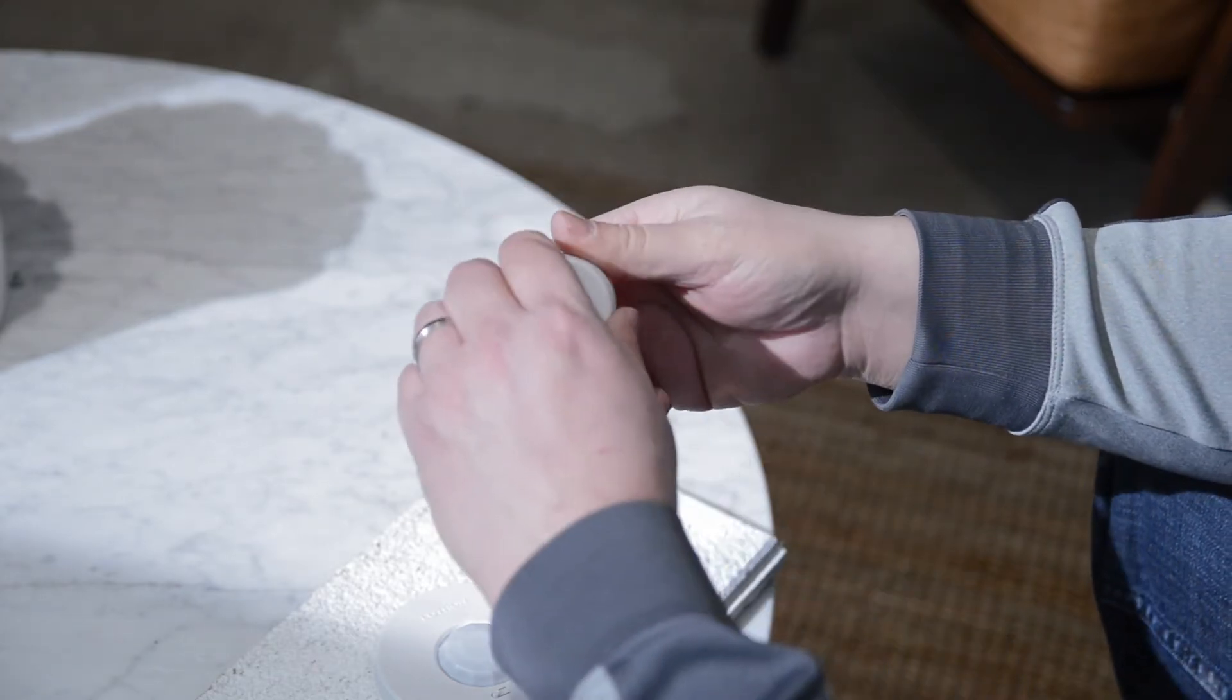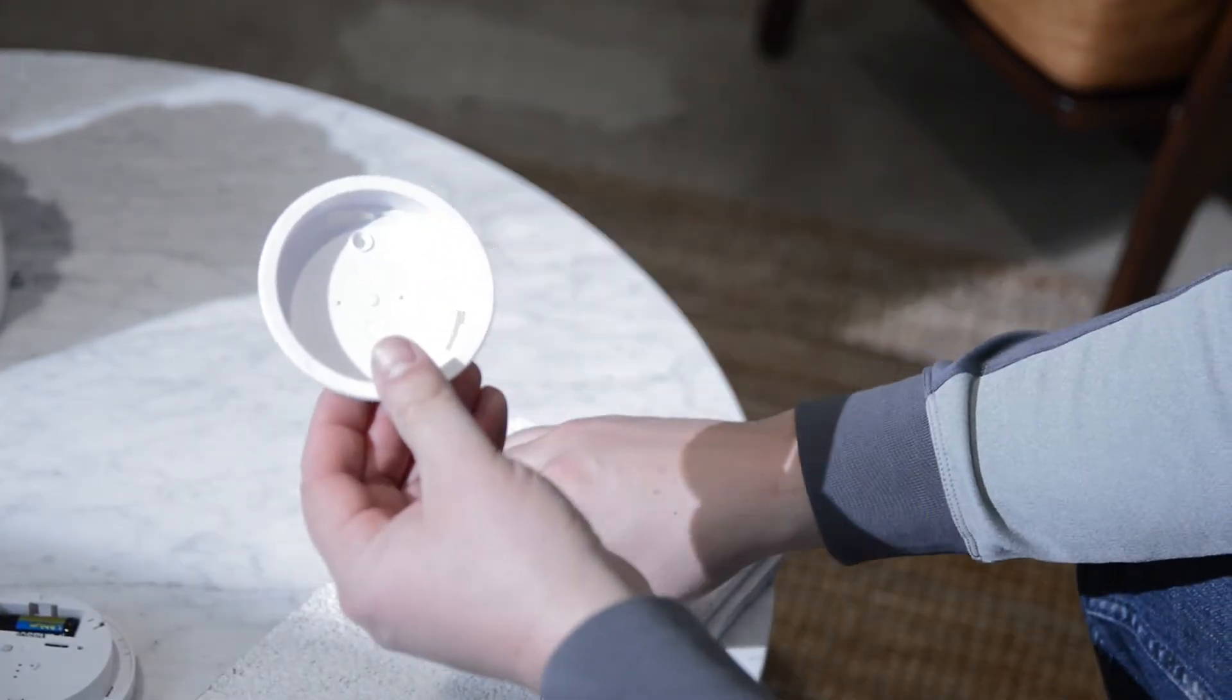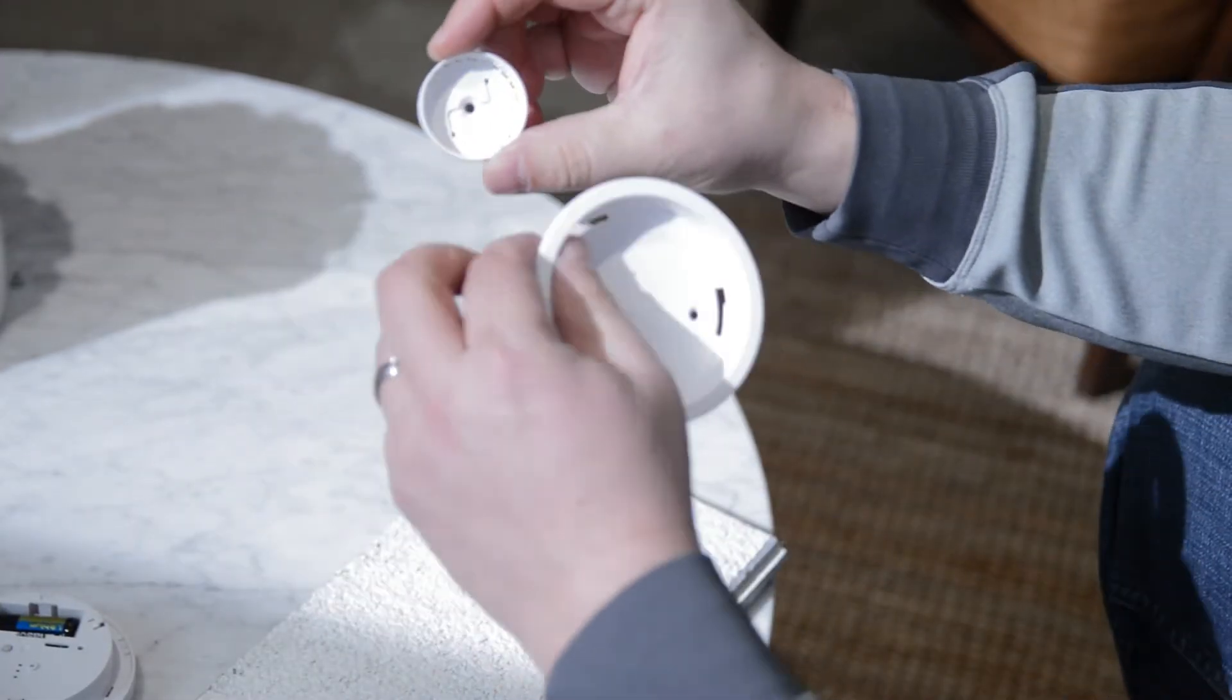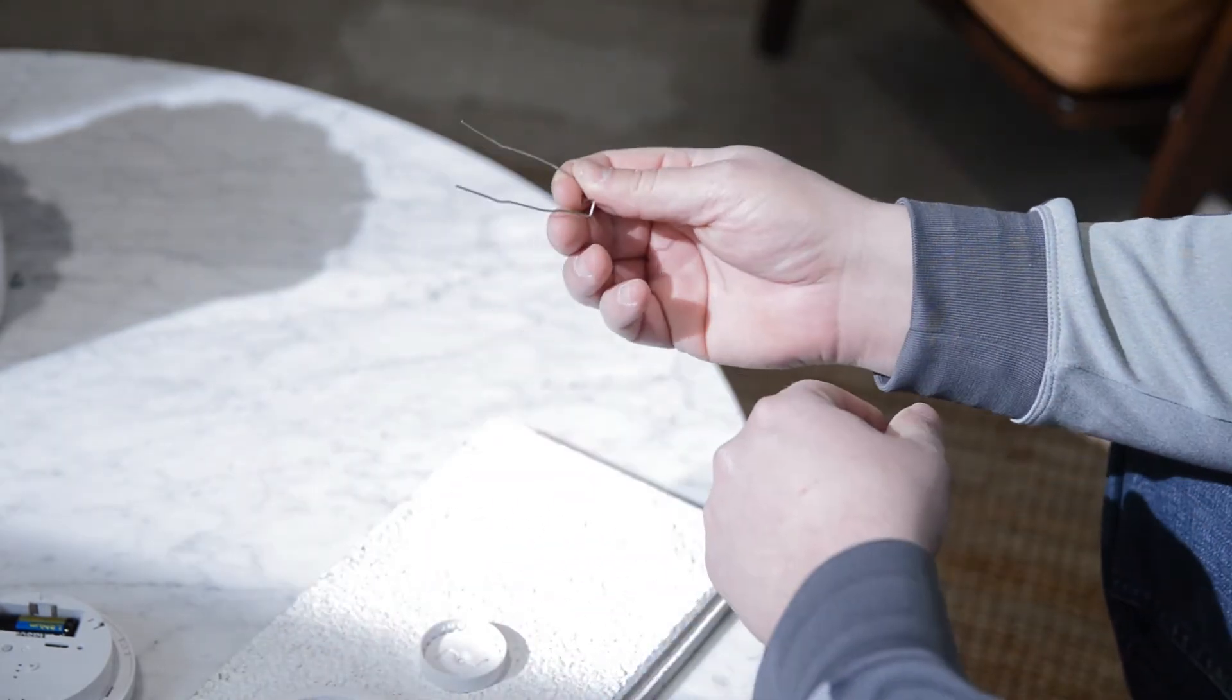First step is remove the mounting bracket. You will notice each mounting bracket has two very small pinholes. These pinholes are to be used with Lutron's included metal mounting pin.